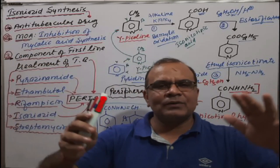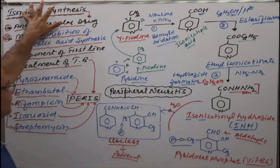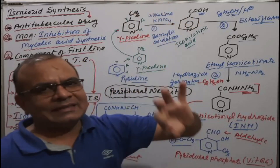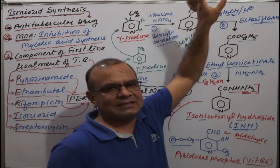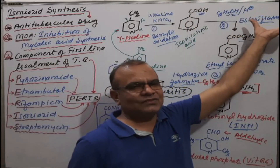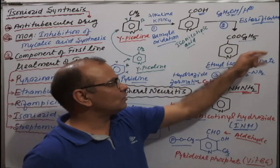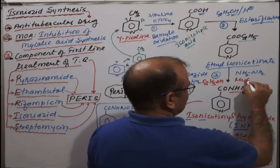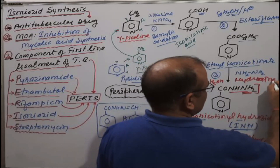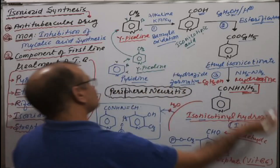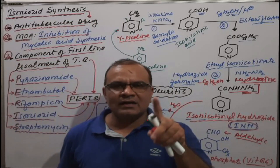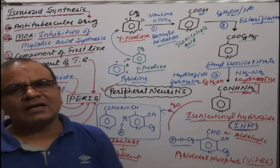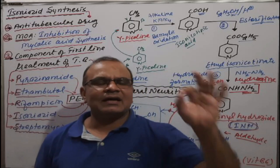In summary: isoniazid is a first-line anti-tubercular drug. Gamma-picoline is the starting material. Step 1 is benzylic oxidation with alkaline KMnO4 to form isonicotinic acid. Step 2 is esterification with acidic ethanol to form ethyl isonicotinate. Step 3 is reaction with hydrazine to form isonicotinic acid hydrazide (isoniazid/INH). Due to interaction with pyridoxal phosphate, isoniazid causes vitamin B6 deficiency, resulting in the side effect of peripheral neuritis.